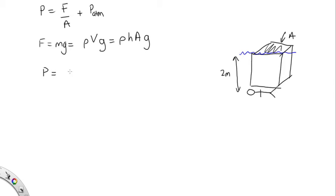The pressure is equal to rho h A g over A plus the atmospheric pressure. So these A's will cancel out. And so now we can substitute in.